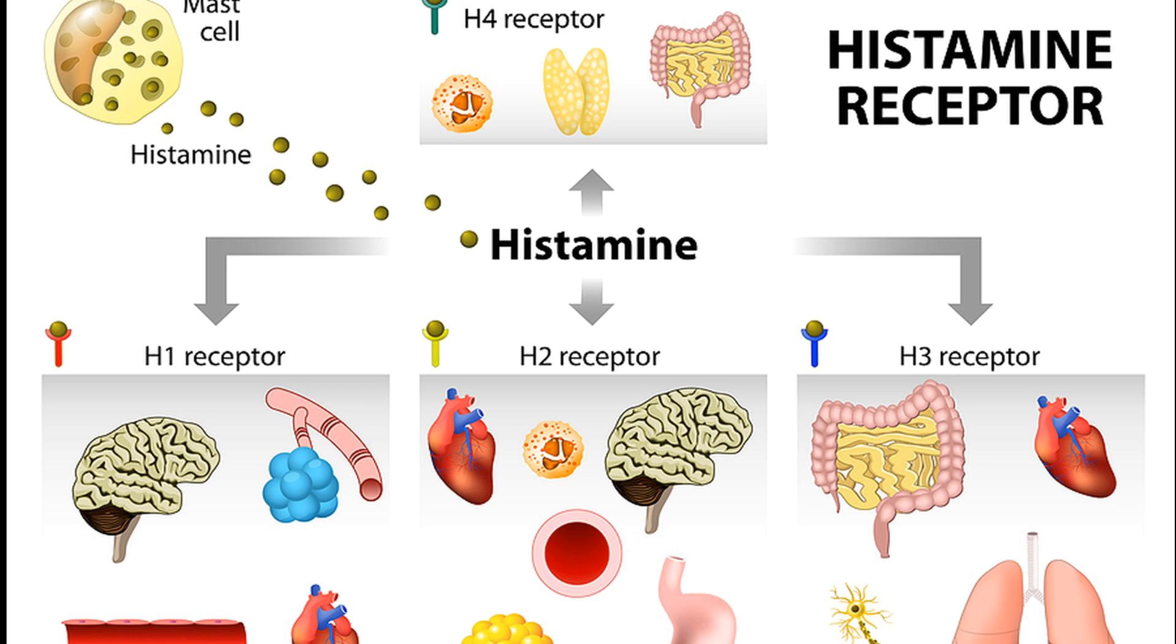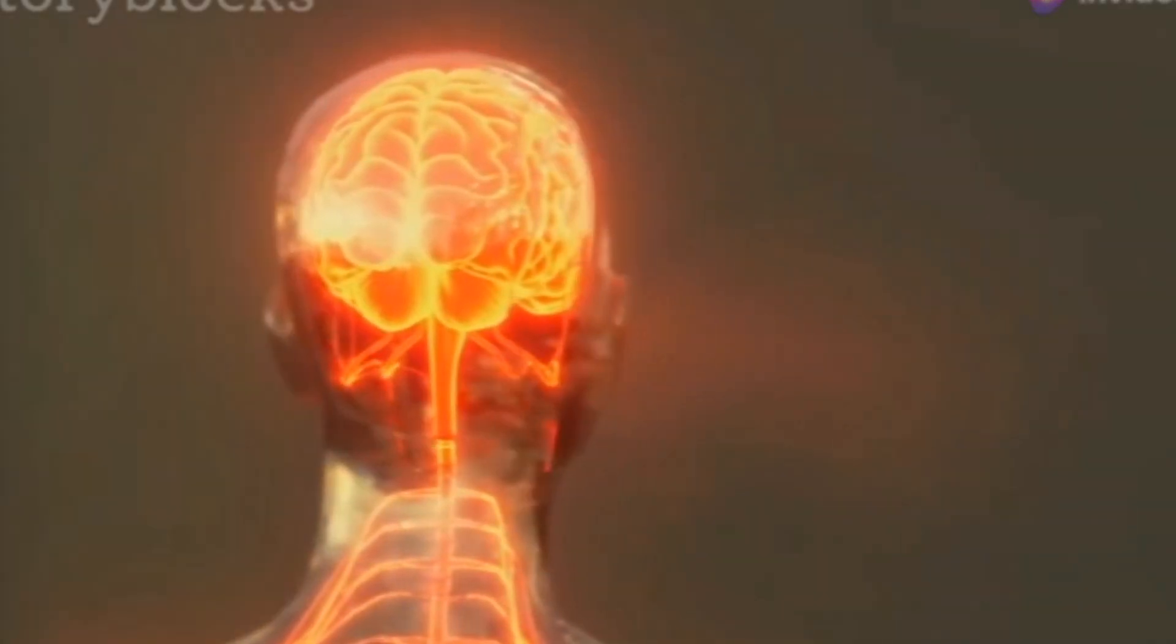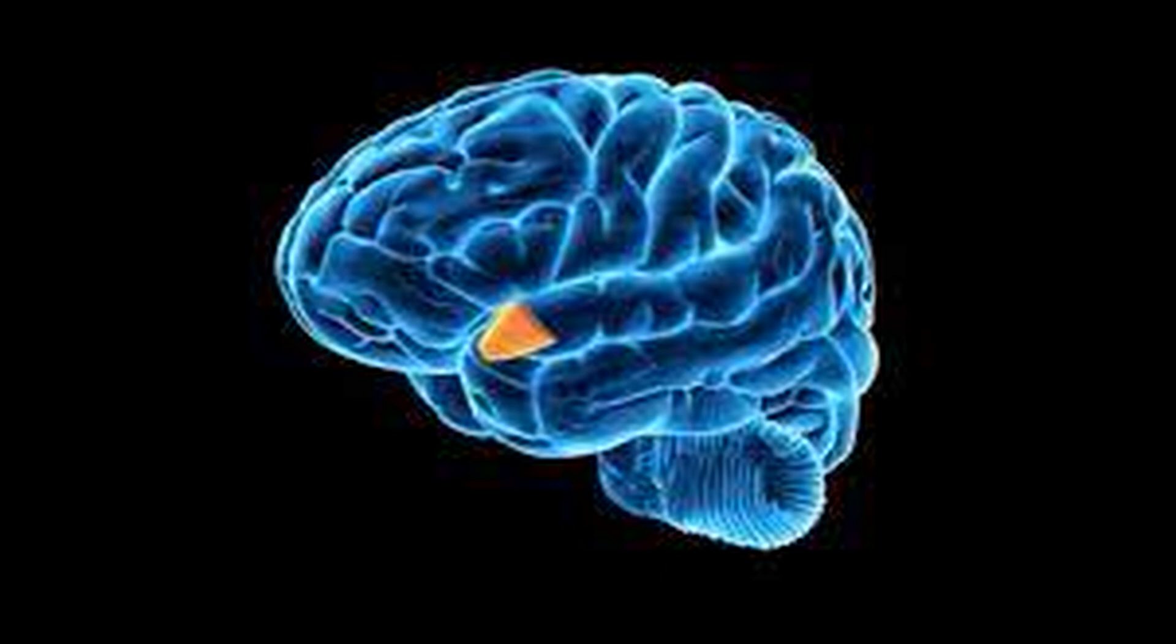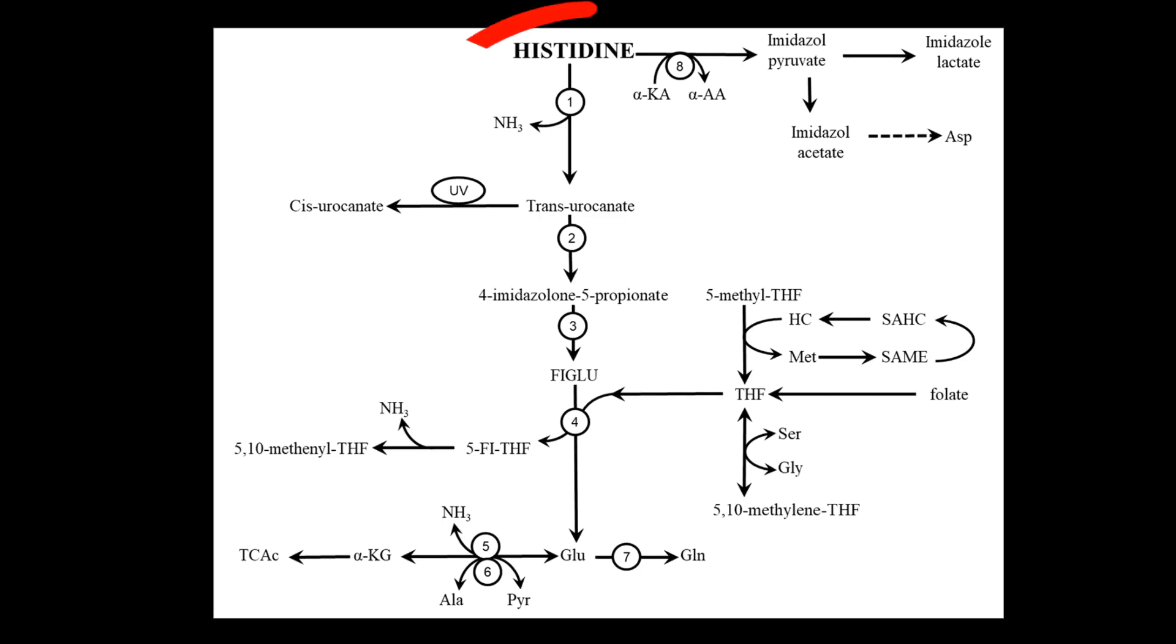Histamine is well known for its role in allergic reactions, but it also acts as a neurotransmitter in the brain. It's involved in regulating sleep, appetite, and cognitive functions. Histamine neurons are primarily located in the hypothalamus, a brain region critical for homeostasis.